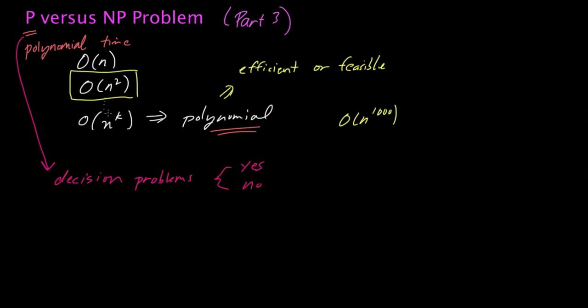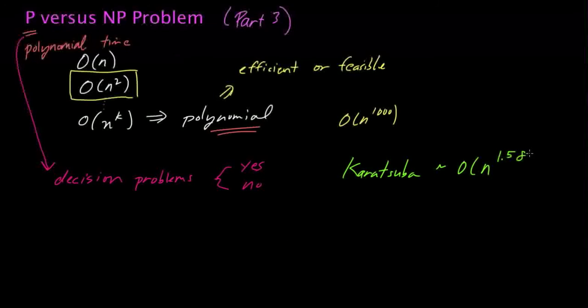There are faster algorithms for multiplication. So, for example, there is an algorithm that was developed by someone named Karatsuba, and the Karatsuba multiplication algorithm can actually multiply two n-digit numbers in approximately big O of n to the 1.585 steps. Now, 1.585 is smaller than 2, and so this algorithm actually runs in time significantly less than big O of n squared. So, it's a much faster algorithm for multiplying two n-digit numbers.